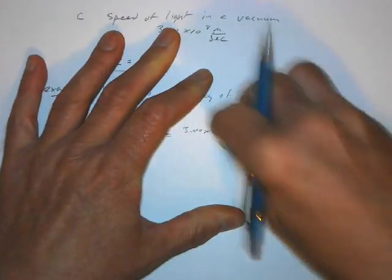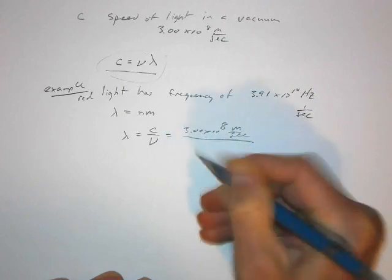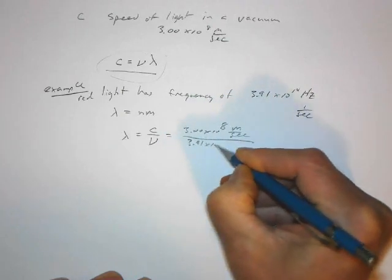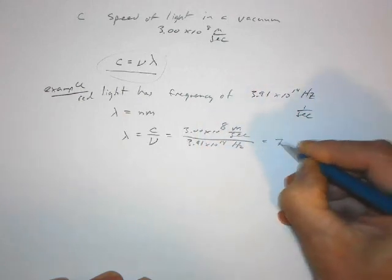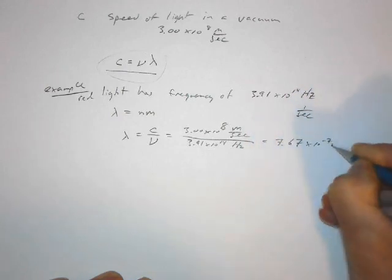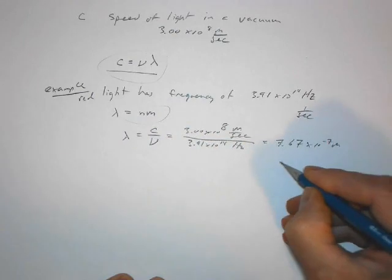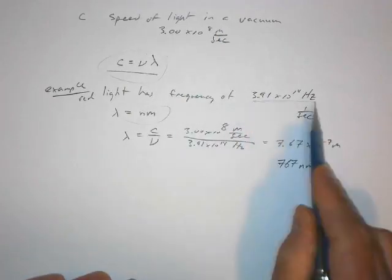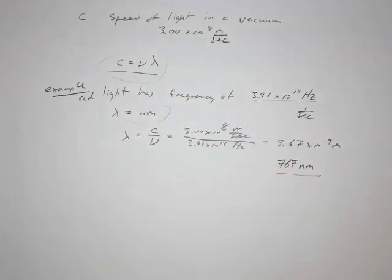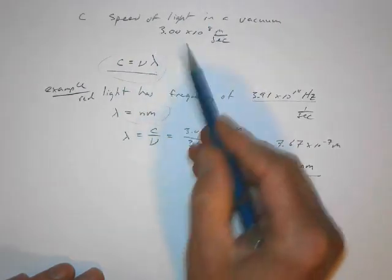That would be 10 to the 8th, not 10 to the minus 8. So that's meters per second. And here we have 3.91 times 10 to the 14th hertz, or per second. And this ends up giving us 7.67 times 10 to the minus 7 meters. Or, moving this over, because we were asked to give our answers in terms of nanometers, 767 nanometers would be the answer. So if we have light of this frequency, we know it has this wavelength. We could also ask the question, if we have light of a certain wavelength, we can find the frequency. Quite simple, straightforward algebra, using this equation and this constant. These are two things that you're going to have to know and memorize.